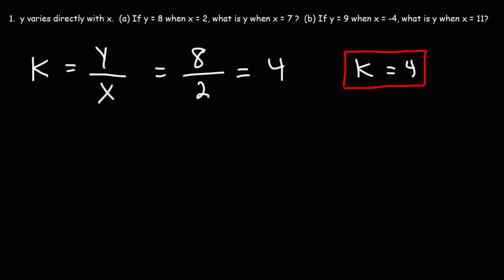The second thing that we need to do is write the equation. So the equation is Y equals KX. What we're going to do is plug in K into that equation. So the equation is Y equals 4X. Now that we have the equation, we can answer the second part of the question.